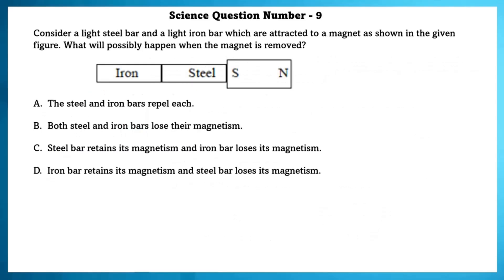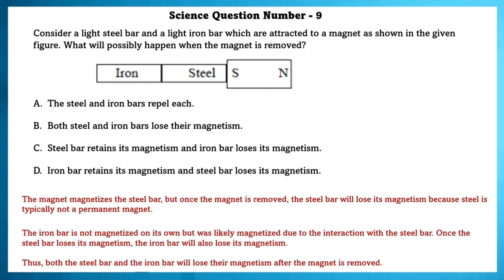Science question number 9. Consider a light steel bar and a light iron bar, which are attracted to a magnet as shown in the given figure. What will possibly happen when the magnet is removed? The magnet magnetizes the steel bar, but once the magnet is removed, the steel bar will lose its magnetism because steel is typically not a permanent magnet. The iron bar is not magnetized on its own, but lightly magnetized due to the interaction with the steel bar. Once the steel bar loses its magnetism, the iron bar will also lose its magnetism. Thus, both the steel bar and iron bar will lose their magnetism after the magnet is removed.